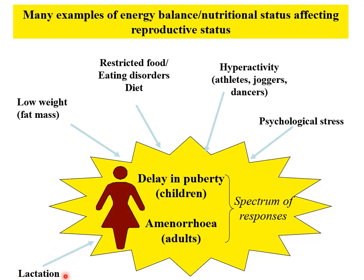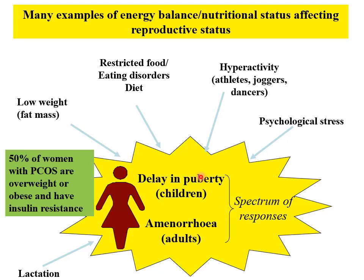Lactation is heavily energy demanding, and ovulation tends to be suppressed during lactation. And things like polycystic ovarian syndrome (PCO): 50% of women with PCO are either overweight or clinically obese and tend to have insulin resistance — a metabolic disorder associated with a reproductive disorder.